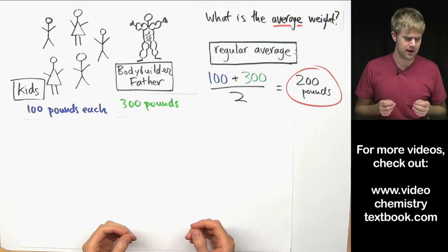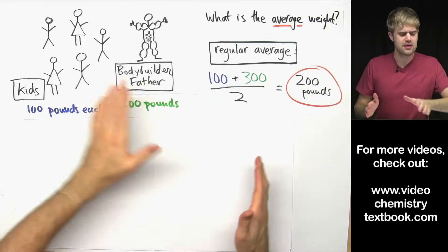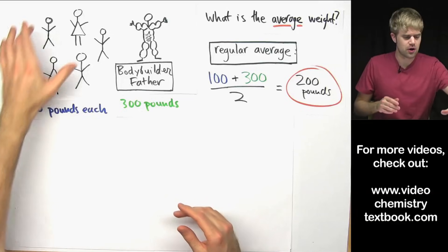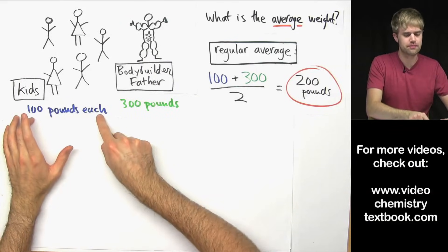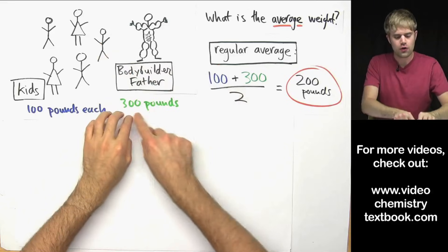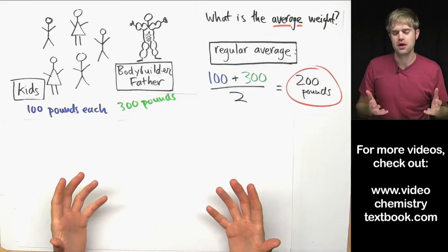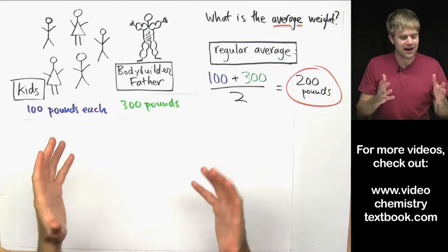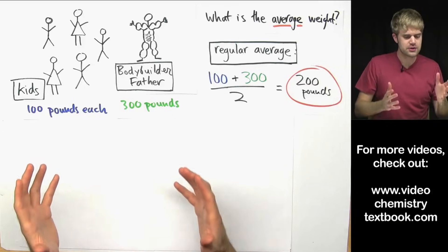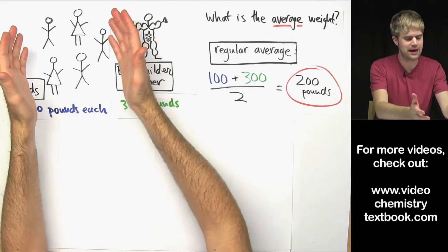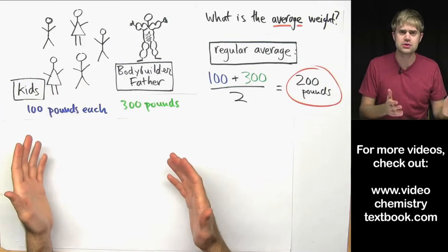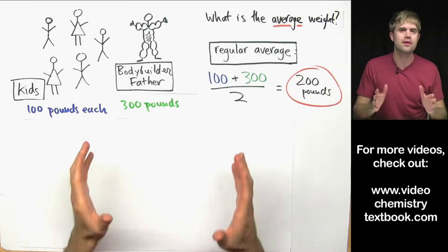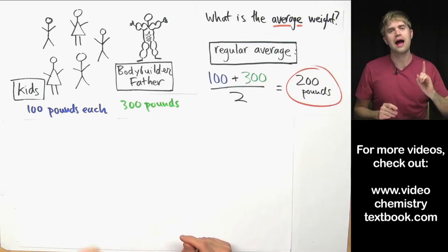But is it really fair to say the average weight of this group is 200 pounds? There are five kids that each weigh 100 pounds and only one father who weighs 300 pounds. To say the average weight is right in the middle of those two weights doesn't make a lot of sense. It feels like we should be able to take into account that there are many more kids who weigh a lot less than the one bodybuilder father. This is where the idea of a weighted average comes into play.